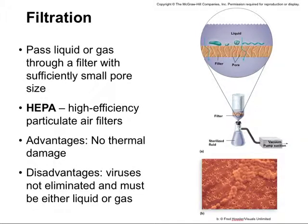Another means of sterilization could be filtration. This is where we pass a liquid or a gas through a filter with sufficiently small pore size. As the liquid passes through, some microbes are stuck on the other side of the filter. The pores can be anywhere from 8 microns to 0.02 microns — 8 microns is really fine, and 0.02 is considered ultra-fine. These really small pores permit true sterilization because they even prevent the passage of viruses. We also use these filters to separate microorganisms or enumerate bacteria in water analysis, and they can be used to prepare blood products like serum, drugs, IV fluids, and different growth media.